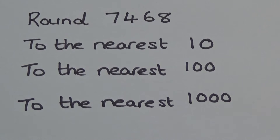Hi everyone, I'm Amber and today we're going to look at rounding numbers to the nearest ten, one hundred, and one thousand. We're going to look at rounding the number seven thousand four hundred and sixty-eight to the nearest ten, then the nearest hundred, and then the nearest thousand.